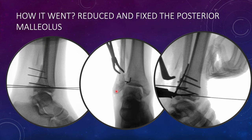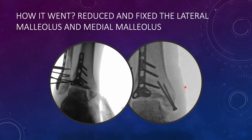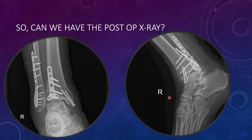To proceed surgically, we first reduced the posterior malleolar fracture under direct vision through a posterolateral approach to the ankle, then placed a buttress plate over the posterior malleolus. We then shifted focus to the fibula. The surgeon reduced the fibula and placed a lateral locking plate. The medial malleolus was addressed by achieving compression and placing positional screws — lag screws were not used; the fracture was reduced and positional screws were placed.